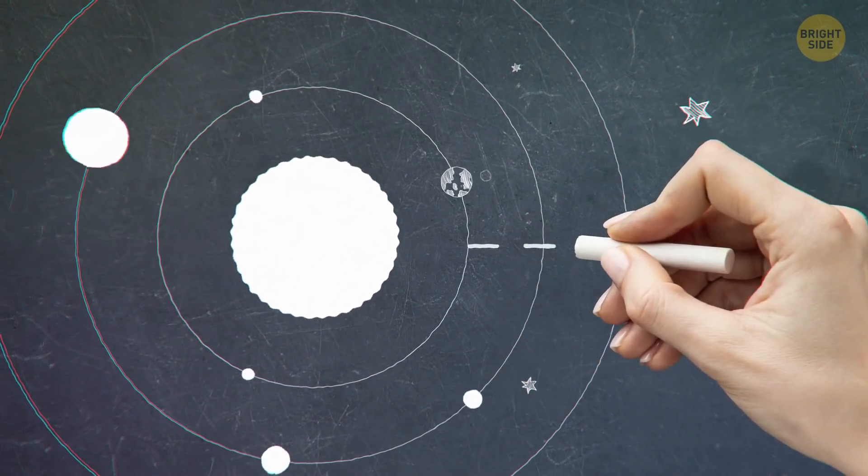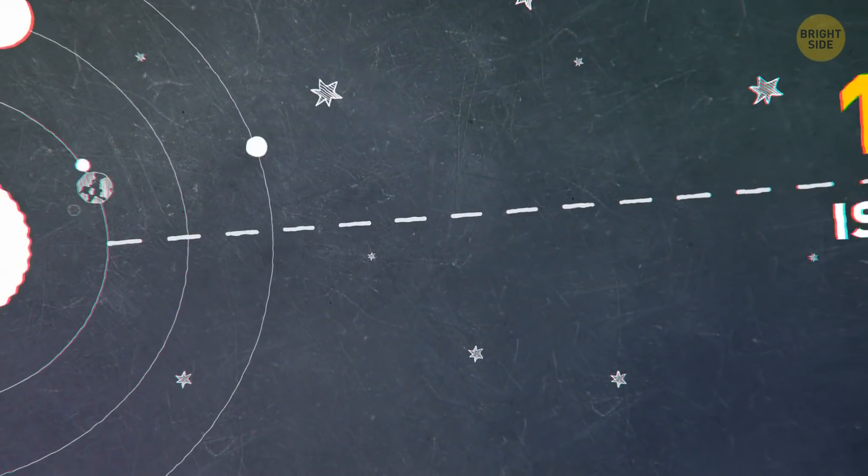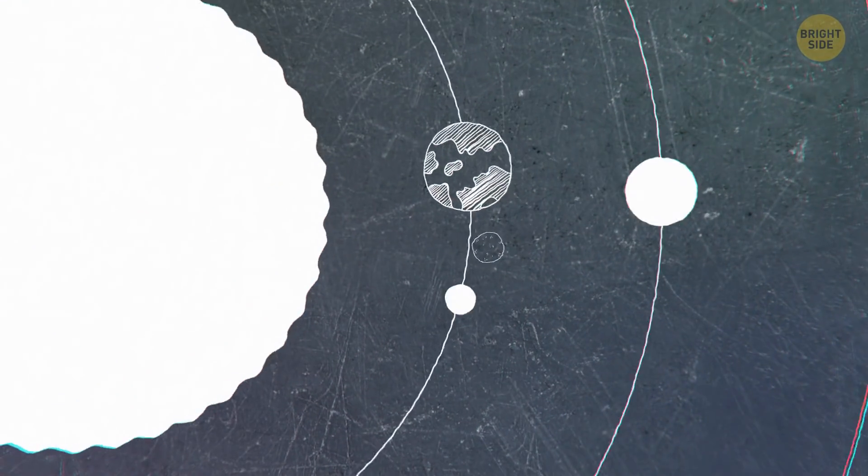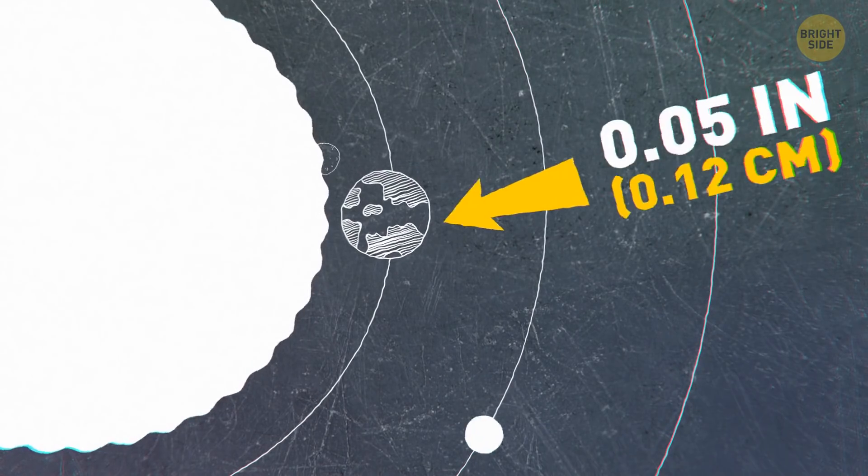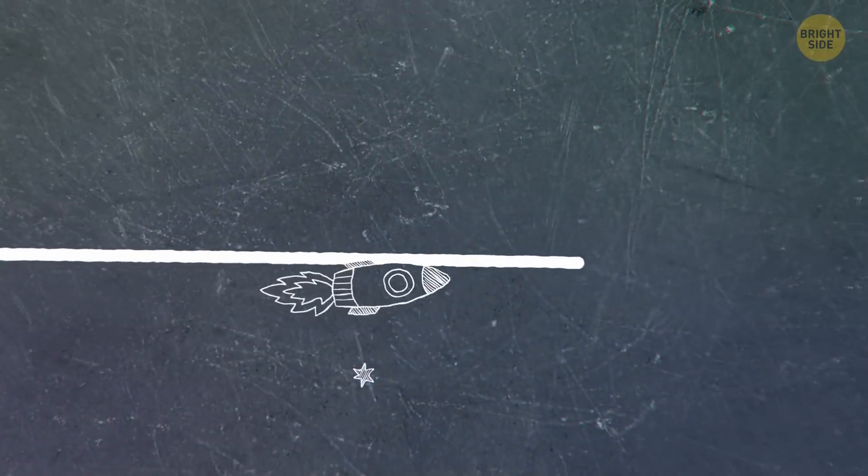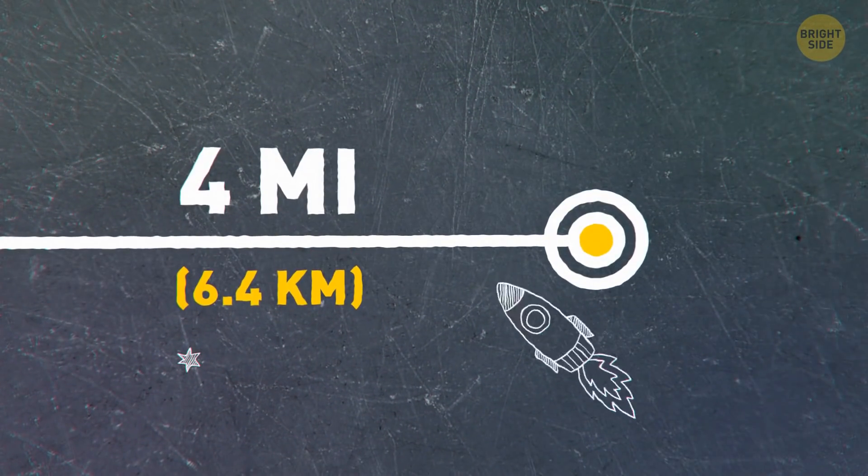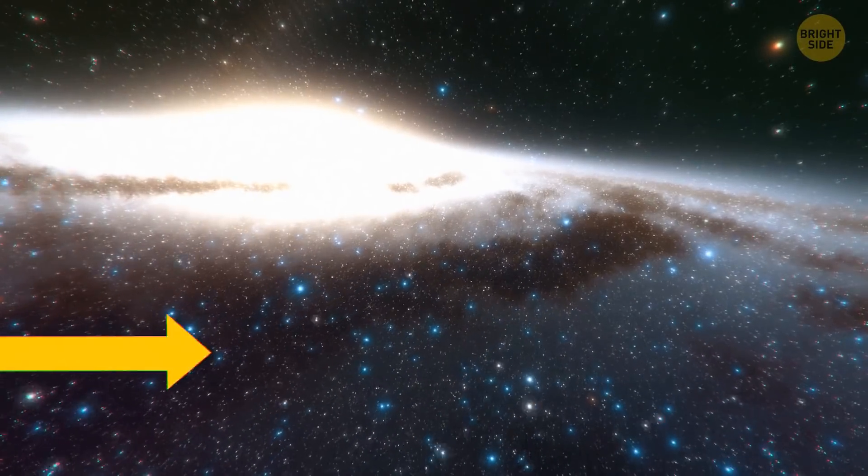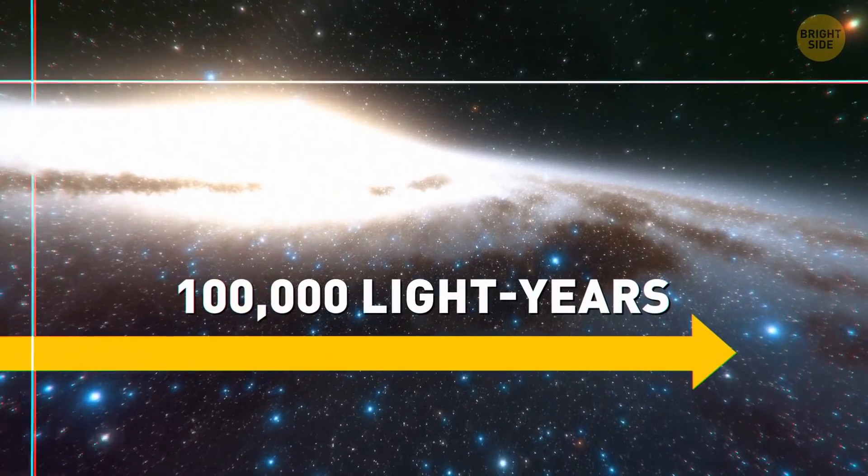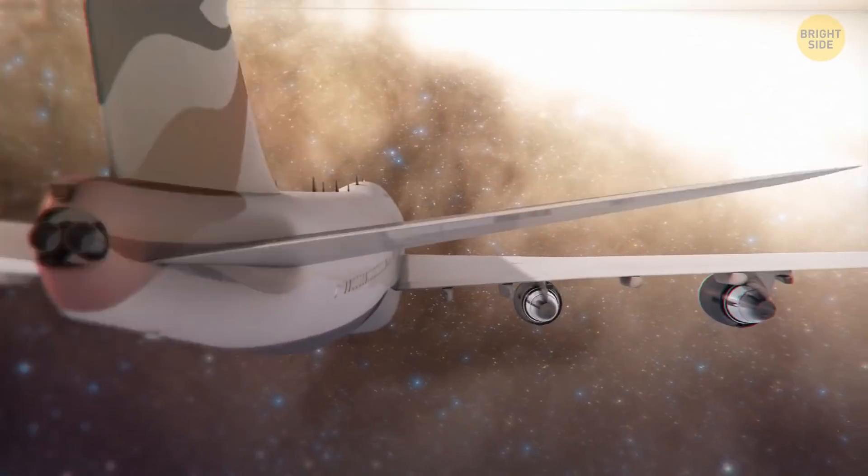But don't worry. For people, the distance of 1,000 light-years is unreachable. For example, if we were to make a model where the Earth's distance to the Sun was only 0.05 inches, you would have to travel about 4 miles to get to this black hole. But our galaxy, the Milky Way, is about 100,000 light-years wide. So, the distance of 1,011 light-years doesn't seem that long in comparison.